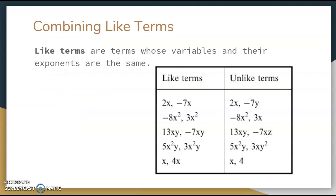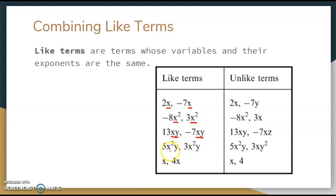Another way to simplify expressions is by combining like terms. Like terms are terms whose variables and their exponents are the same. Looking at this chart under like terms: 2x and negative 7x — since both have a singular x, those are like terms. The only thing that changes during combining like terms is the coefficients; we're more concerned about the variables being the same. Examples: x squared and x squared; xy and xy; x squared y and x squared y; x and x — all like terms.